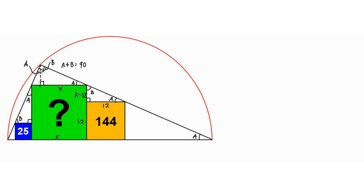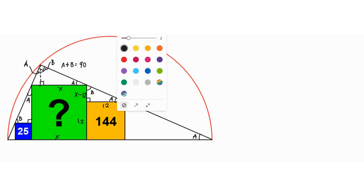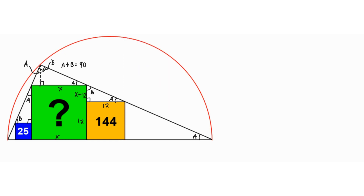Now focusing on the blue square: since its area is 25, its side length is 5, and the remaining segment along that side is x minus 5.